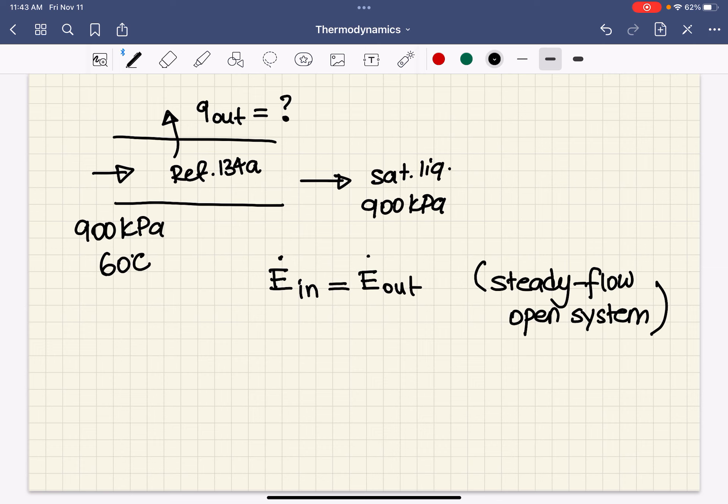And in this case, what energies are getting in? Only mass is getting in, right? So mass flow rate times its enthalpy. What energies are getting out? Mass and heat.